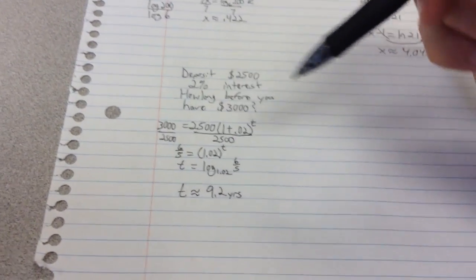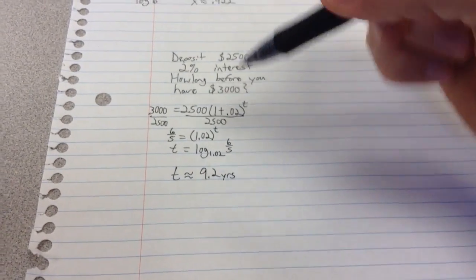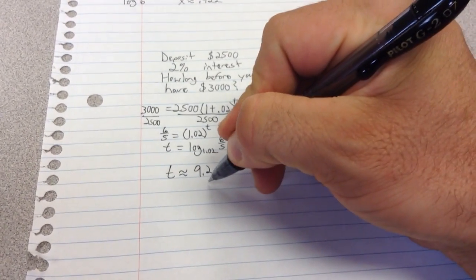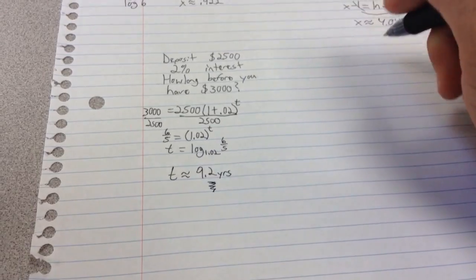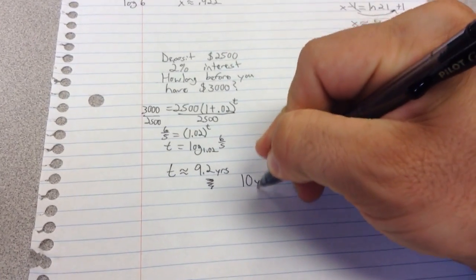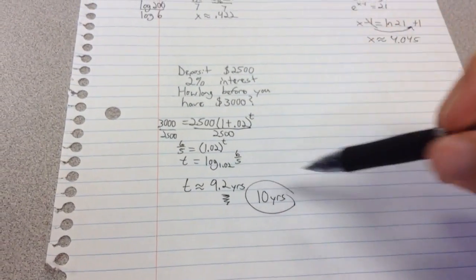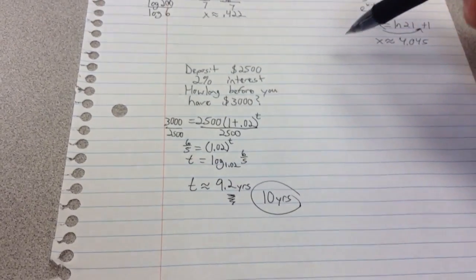The problem is, remember that this interest is added once a year. So technically this right here is not going to help me because 0.2 years. I'm actually probably going to have to do 10 years here to actually get my $3,000 in my bank account.